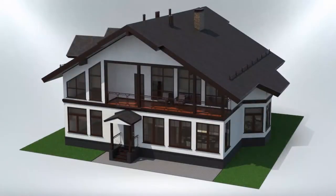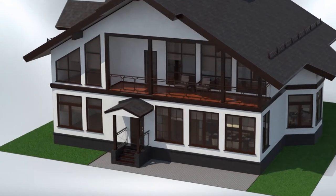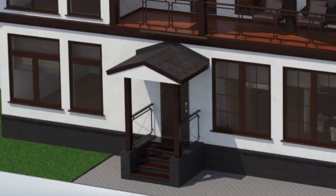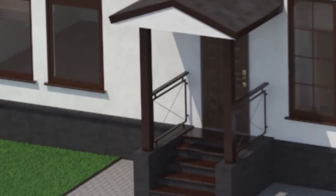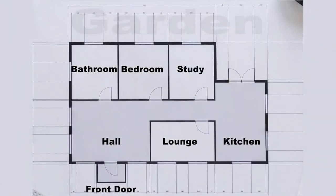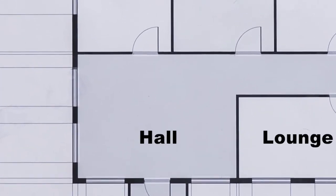This is the house where we're going to place this information. Let's dive into the hallway and think about where we're going to put these chunks of information so we can access them in an exam situation. Here's the layout: we've got the hall, the lounge, the kitchen, a bathroom, a bedroom, and a study. Use your own home for this if it's easier for you.